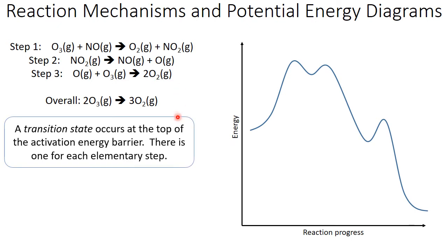A transition state occurs at the top of the activation energy barrier. You can see that we have our reactants going up to a transition state. The activation energy is that difference in energy between the reactants and the transition state. We're going to have one of these transition states for every elementary step in our mechanism. You can see we have three steps. We have three transition states.